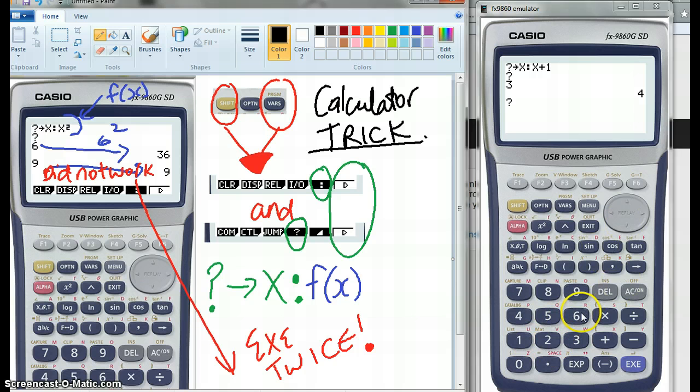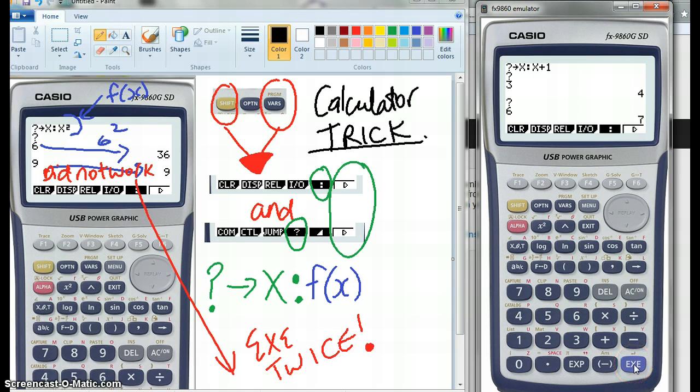So for example, here I'm going to pop the 6 in and execute. And I'm getting from here, where it says x plus 1, I'm getting 6 plus 1 is 7. I need to hit execute again to get the question mark. So if I go 9, the answer's going to be 10. I need to hit execute again.